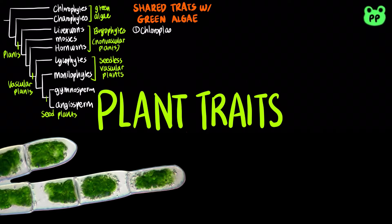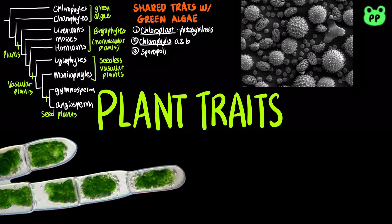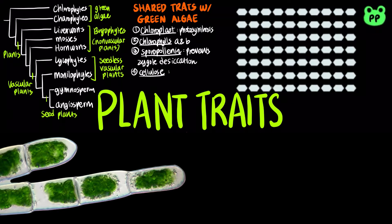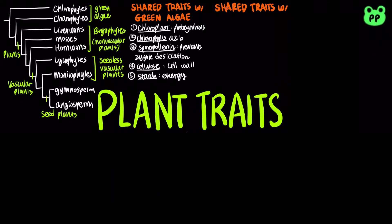Chloroplast is the organelle that functions in photosynthesis. It contains green pigments known as chlorophylls A and B that help absorb light. Sporopollenin is an outer coating that helps prevent desiccation or water loss. Cellulose is a polysaccharide found in cell walls, whereas starch is a polysaccharide used for energy storage.